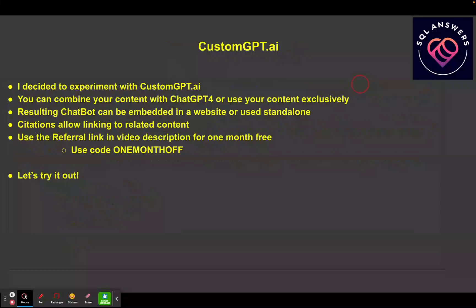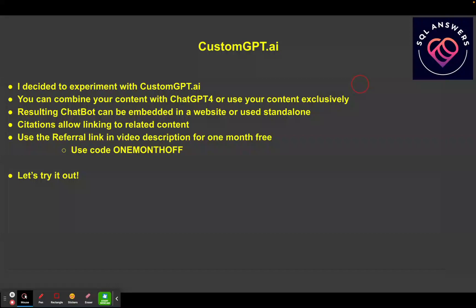The site I stumbled upon is named CustomGPT.ai and it's actually based on ChatGPT-4, which it uses as its engine. You can effectively train it with your own content by loading it in. When you configure your chatbot you choose whether you want it to use your content exclusively — which is nice in some cases so it's entirely you — or you can combine it with your content plus everything else that ChatGPT-4 offers.